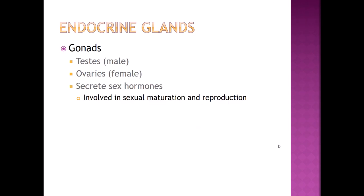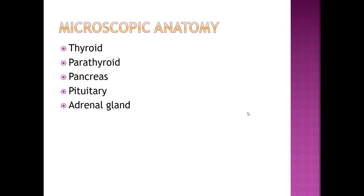The gonads — testes in males and ovaries in females — produce our sex hormones: testosterone in men, and estrogen and progesterone in women. These are all related to maturation of sexual characteristics, reproduction, and the reproductive and sexual maturation process. You're going to look microscopically at the pituitary, the thyroid, the parathyroid, the pancreas, and the adrenal gland. There is a whole separate lecture just on the microscopic anatomy of these different endocrine organs, so you should definitely listen to that before you come to lab so you know what to look for in your histology notebook.